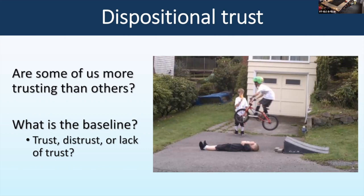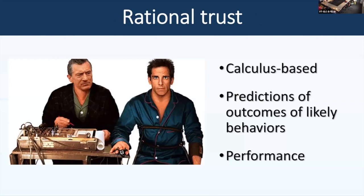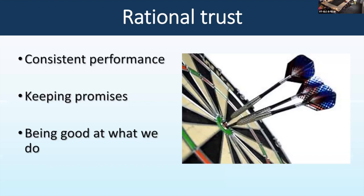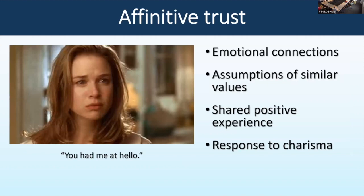The second form is calculus-based or rational trust. If I'm deciding to trust Brad, I'm thinking: is he good at this stuff? Has he followed through in the past? Do I think whatever he does will benefit me? This is based on consistent performance, keeping promises, demonstrating competence. These were the answers you all gave, and in the business world this is often how trust is thought about. However, have you ever just met somebody and suddenly trusted them—or distrusted them—as a knee-jerk reaction? Emotions really come into trust. We call that affinity-based trust.